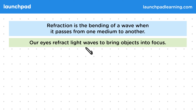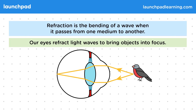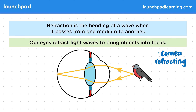Refraction is the bending of a wave when it passes from one medium to another. Our eyes refract light waves to bring objects into focus. Here's that cross-section of our eye again. If you look at the path of the light wave, you can see that it bends twice. At this point here, the cornea is refracting the light.